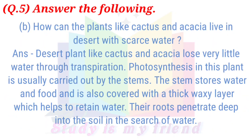B. How can plants like cactus and acacia live in deserts with scarce water? Answer: Desert plants like cactus and acacia lose very little water through transpiration. Photosynthesis in these plants is usually carried out by the stems. The stems store water and food and are covered with a thick waxy layer which helps to retain water. Their roots penetrate deep into the soil in search of water.